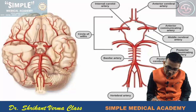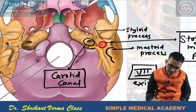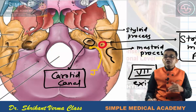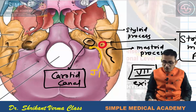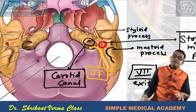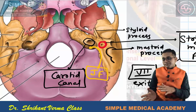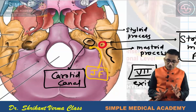Another opening visible here is the external opening of the jugular foramen, which we have already seen in the previous part.